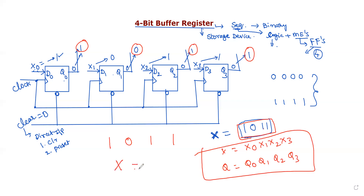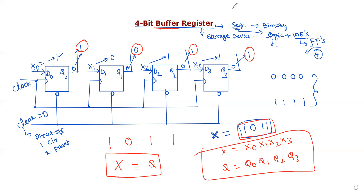Whatever you give as input X, that same value will be available at the output Q. Therefore X equals Q. So X equal to Q, meaning the buffer operation is performed. That is why this circuit is called a 4-bit buffer register. Please subscribe, like, and share. Thank you.